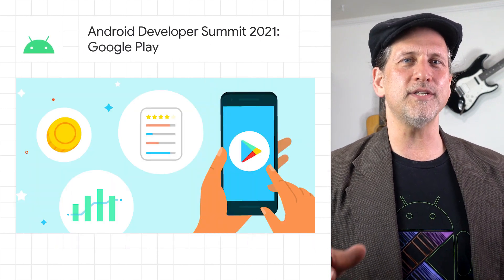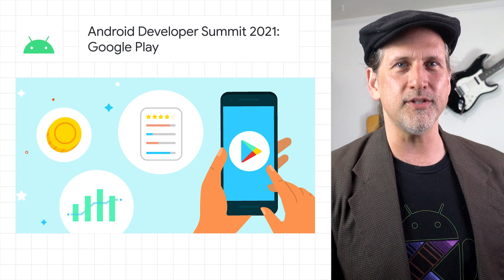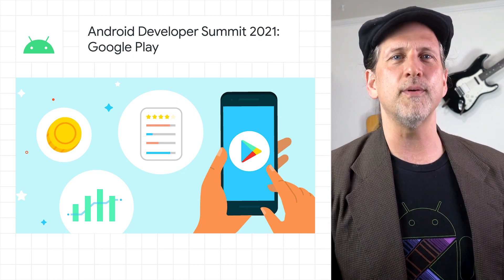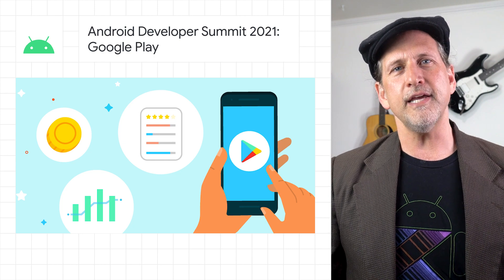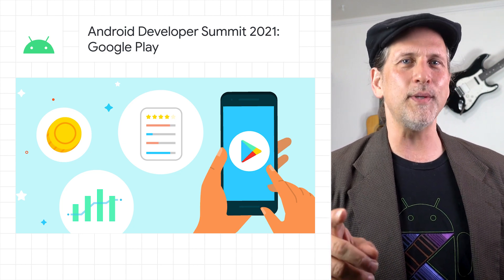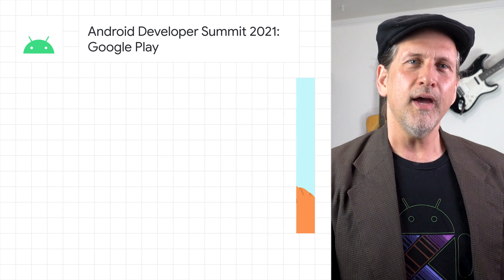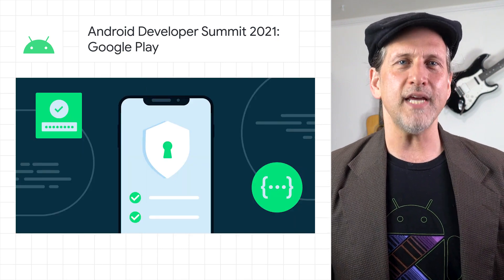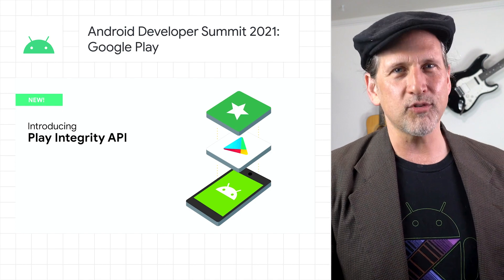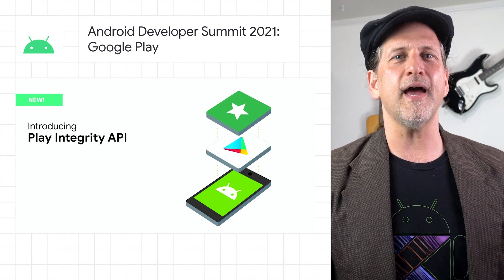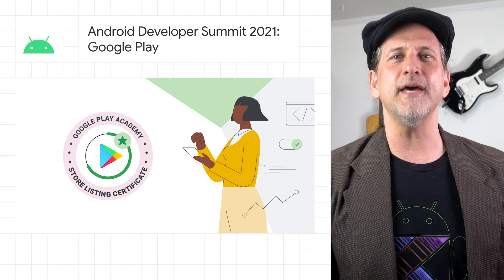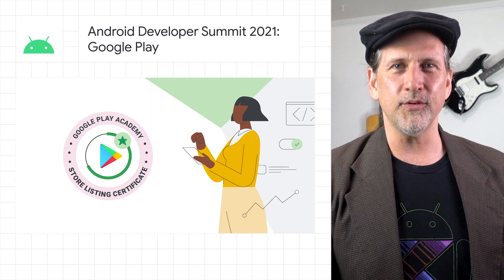Google Play announced that starting January 1, 2022, the service fee for all subscriptions is decreasing from 30% to 15%. E-books and on-demand music streaming services will now be eligible for service fees as low as 10%. We also announced that the required data safety form is now available, the Play Integrity API and an updated Play Game Services are in early access, in-app messaging is coming to Play Billing, and the Play Store listing certificate is here. Learn more on the post.